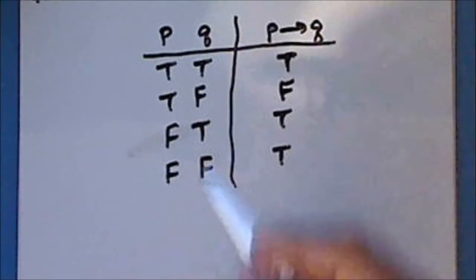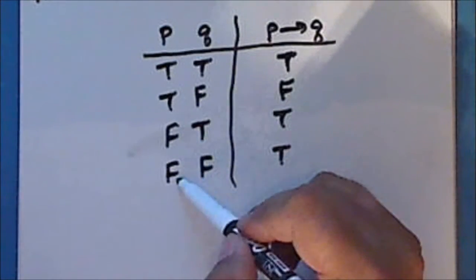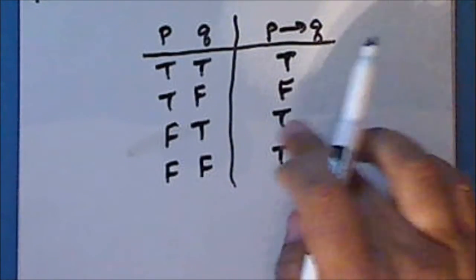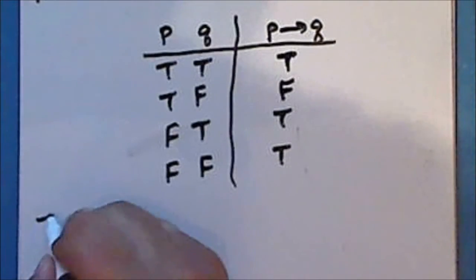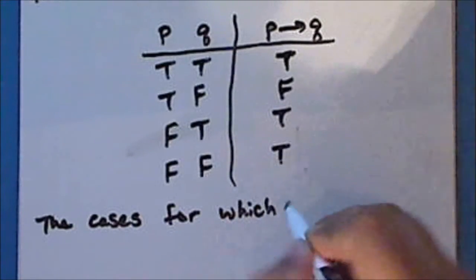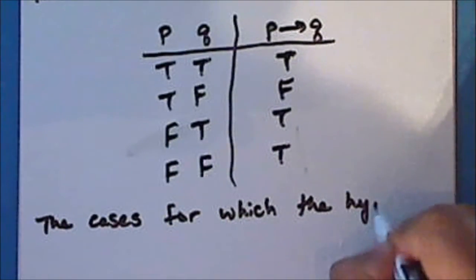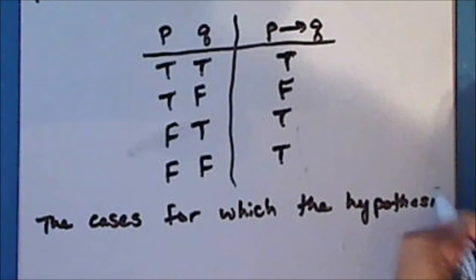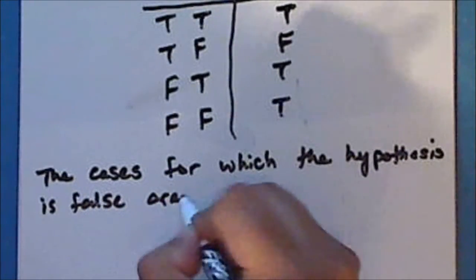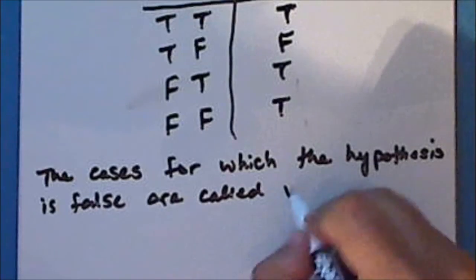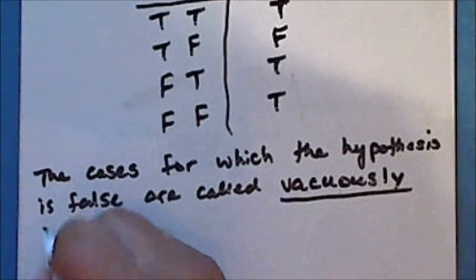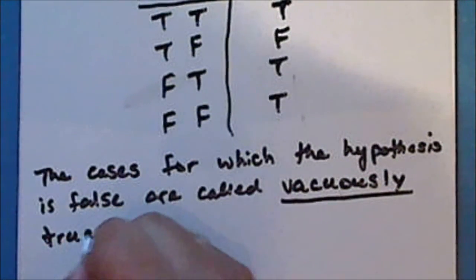Notice that there are two cases for which the hypothesis is false and the implication is true. The cases for which the hypothesis is false are called vacuously true.